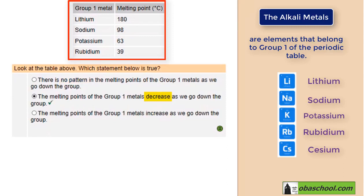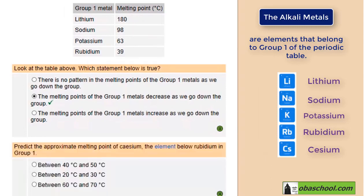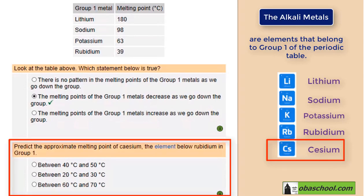The melting points of the group 1 elements decrease as we go down the group. As you can see in the table, they decrease from 180°C to 39°C as we go down from lithium to rubidium. Now predict the approximate melting point of cesium, the element below rubidium in group 1.